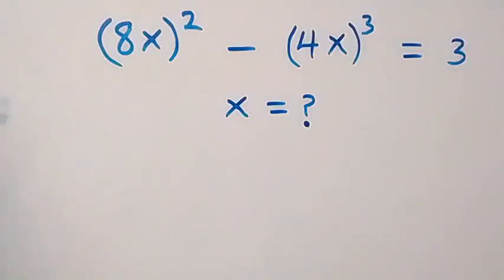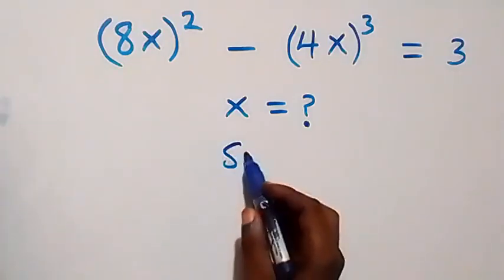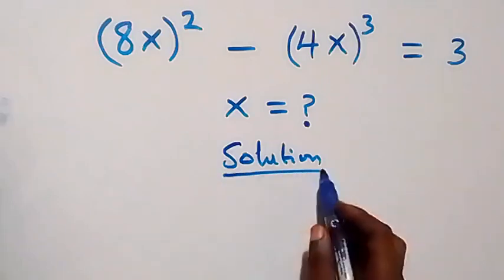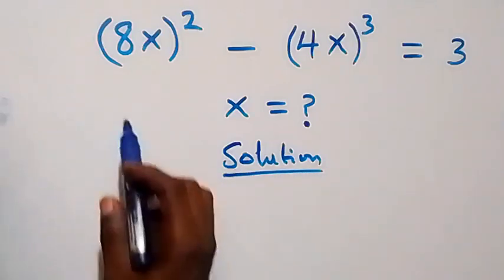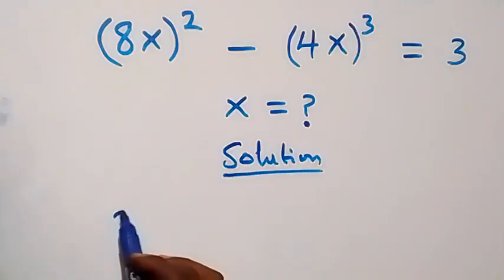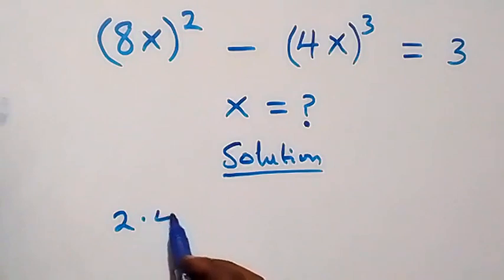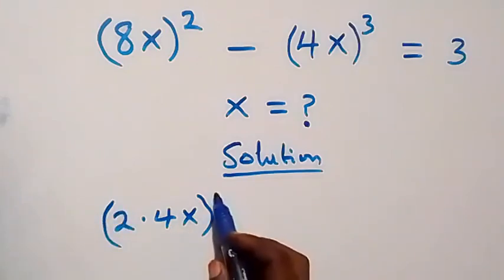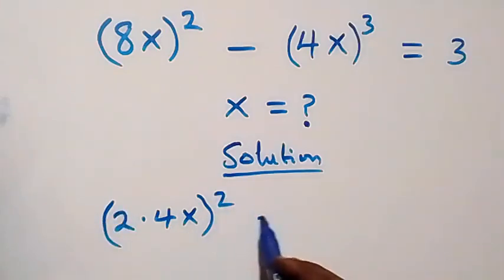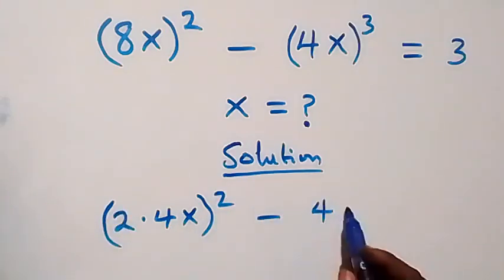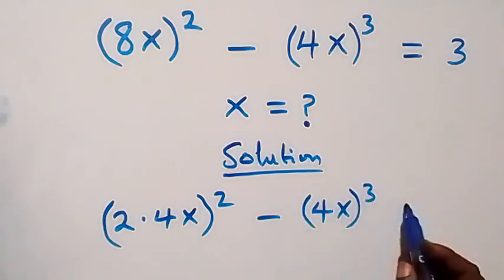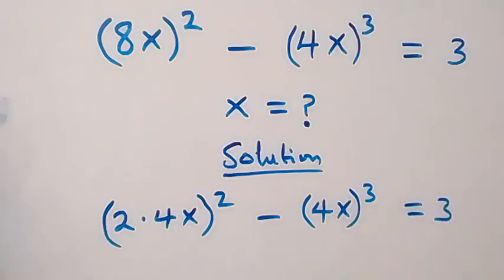Hello, you are welcome here. We need to solve for x in this algebra problem. From here we can rewrite 8x as 2 times (4x) squared minus (4x) all raised to the power 3, and this equals 3.